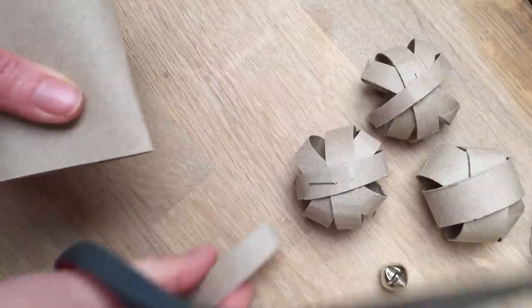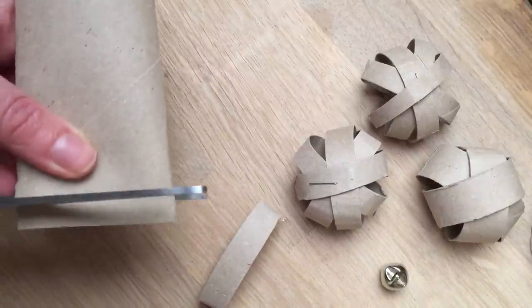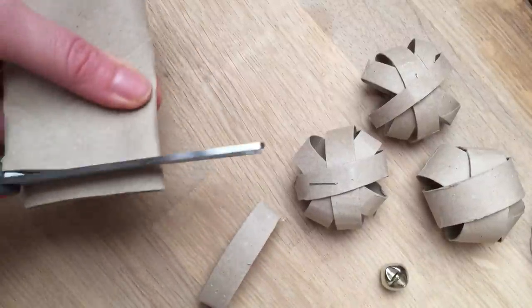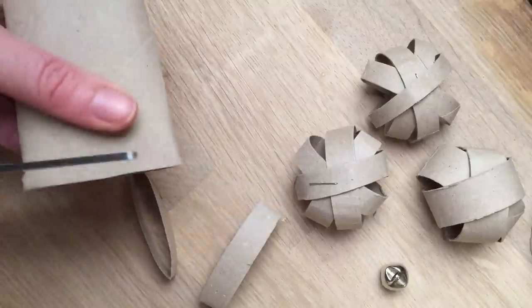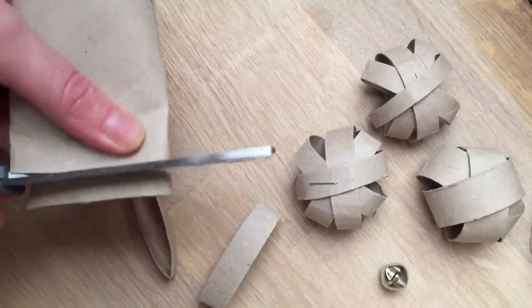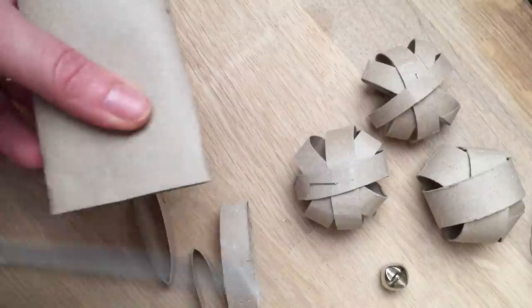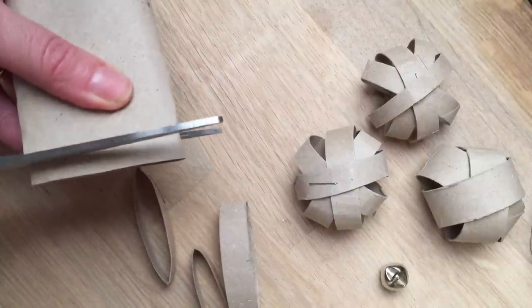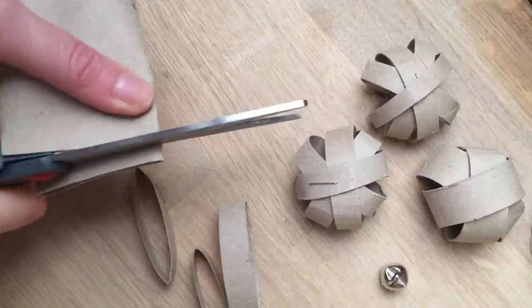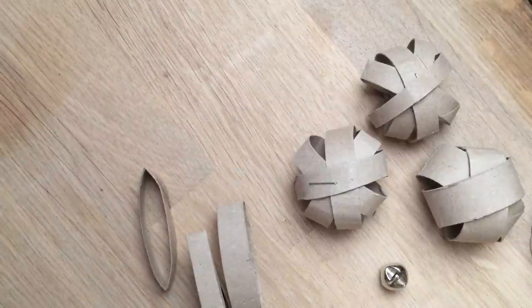If you do thin ones, you probably need four or five. If you do thicker ones, you can get away with three and actually not stapling it as well, because the thicker ones kind of hold themselves together, if that makes sense. So I'm going to do thinner ones because my cat actually prefers thinner ones.